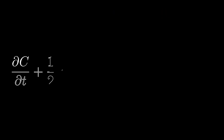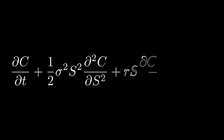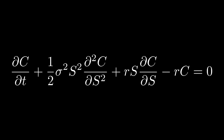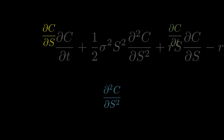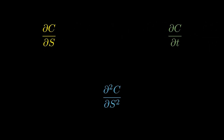The answer to their question led to the equation you're seeing now. It might look a little intimidating, but don't worry. This is just math's way of showing how changes in two key variables — stock price S and time T — affect the value of something else: the call option C.